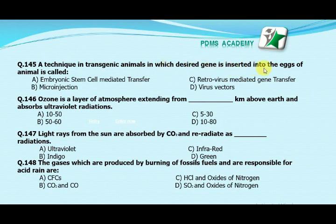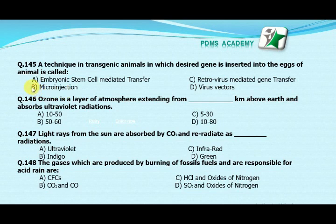Our next MCQ is: a technique in transgenic animals in which a desired gene is inserted into the eggs of an animal is called — Option A: embryonic stem cell-mediated transfer. Option B: micro injection. Option C: retrovirus-mediated gene transfer. Option D: virus vectors. Our correct answer is B, micro injection. Our next MCQ is: ozone is a layer of atmosphere extending from how many kilometers above Earth and absorbs ultraviolet radiations?